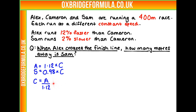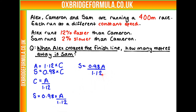We can now substitute this into our equation for Sam. So we know that Sam is 0.98 times A over 1.12. Simplifying this down, 0.98A over 1.12, and we can find the equivalent fraction to this is 7 over 8 times A. So Sam runs at a speed that is 7 eighths of Alex's.